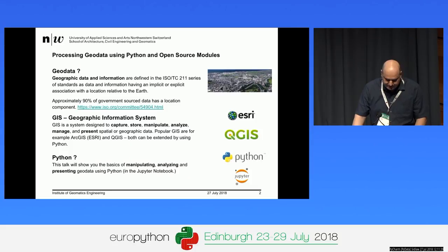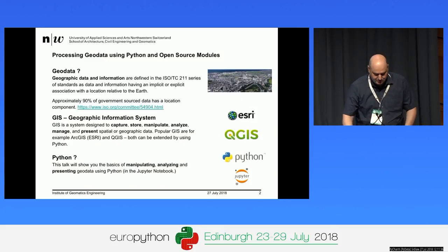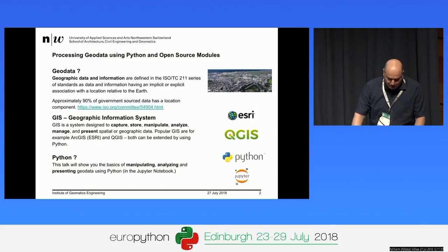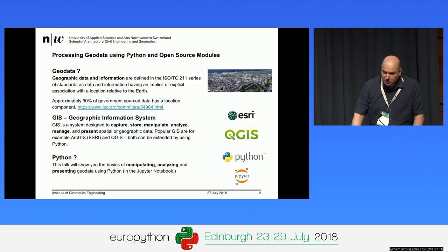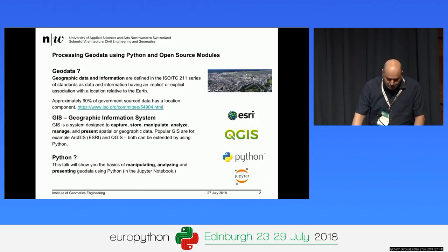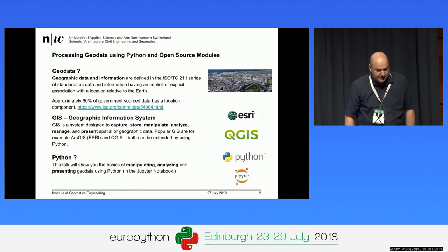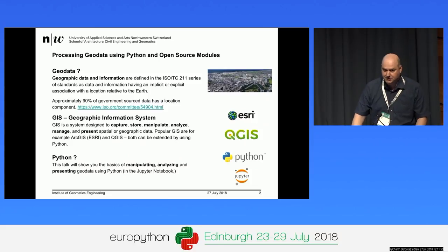The difference is quite simple. In a geographic information system, you do capturing, storing, manipulating, analyzing data, managing and presenting it. In a Jupyter notebook you can do exactly the same. But I want to focus today on the manipulating, analyzing, and visualizing parts.